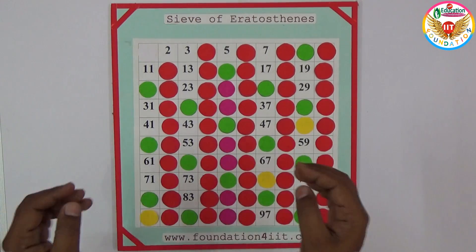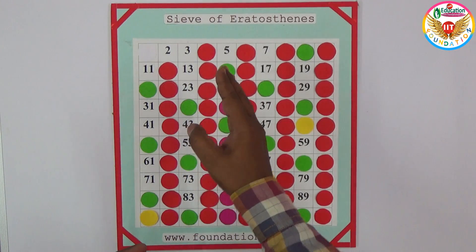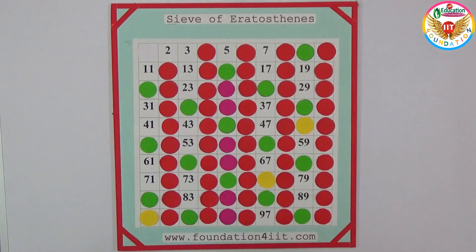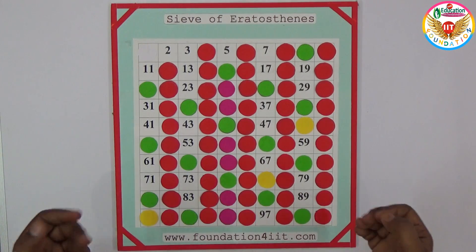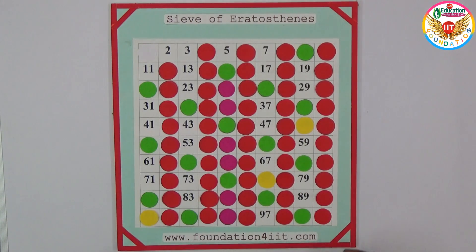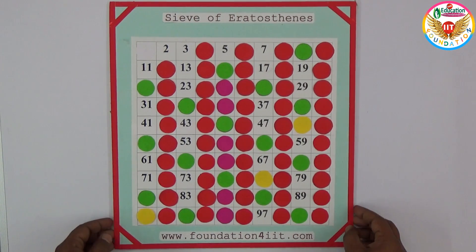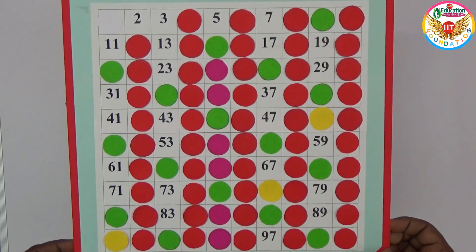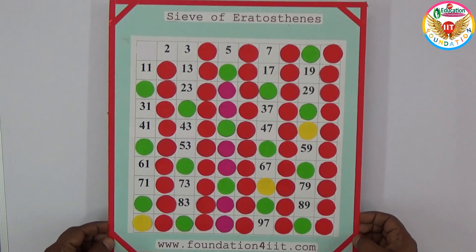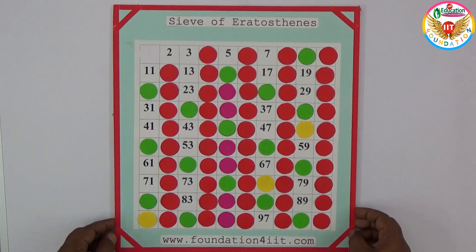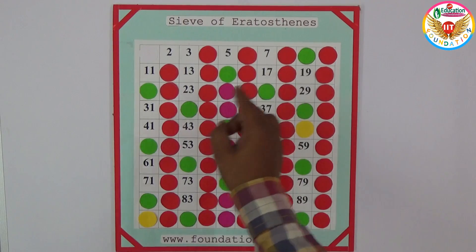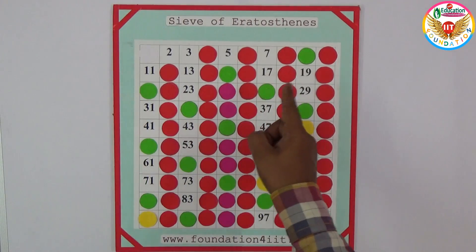Now observe: all multiples of 2, 3, 5, and 7 are closed except 2, 3, 5, and 7 themselves. The remaining numbers which are not covered — those are all the prime numbers between 1 to 100. They are: 2, 3, 5, 7, 11, 13, 17, 19.